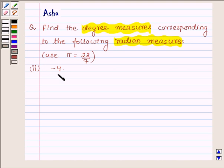The second part is minus 4 radians. So let us begin with the solution and we have to find the degree measure of minus 4 radians.